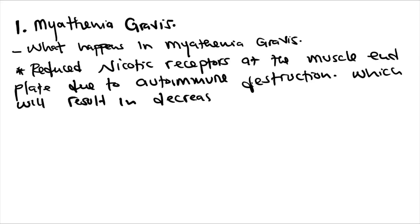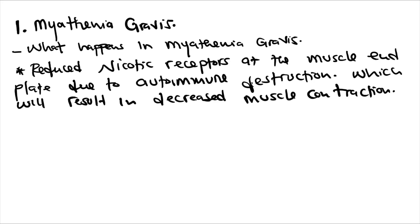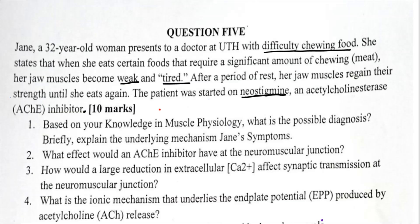Normally, muscle contraction is caused by stimulation of these nicotinic receptors, which causes sodium influx into the cell. This sodium influx produces an end plate potential, which eventually leads to an action potential. The action potential causes depolarization of the sarcolemma — the cell membrane of the muscle cell — leading to contraction. So if there are reduced nicotinic receptors, there will be decreased muscle contraction.